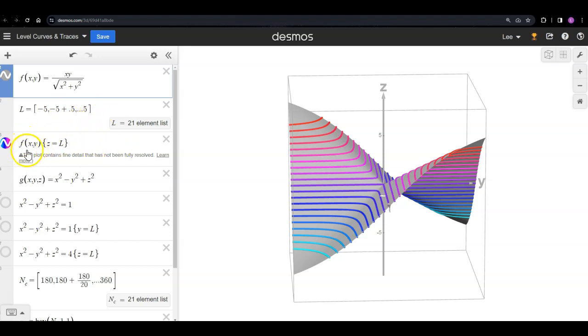What this function is doing is I have f(x,y), which is my normal surface, but with the restriction that z is equal to L. So what this is doing is it's saying z is going to equal negative 5, and then I'll put just that curve right where I have that surface, but with the restriction that z has to be negative 5.